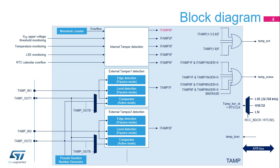The TAMP module has two clock sources: the TAMP clock and the APB clock. The TAMP clock can either use the High Speed External Oscillator (HSE) divided by 32, the Low Speed External Oscillator (LSE), or the Low Speed Internal Oscillator (LSI). Only LSE or LSI are functional in stop and standby modes. Only LSE is functional in shutdown and VBAT modes.